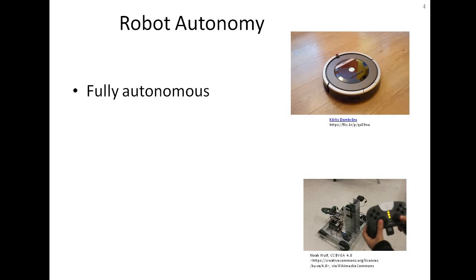There are fully autonomous robots — robots that can complete their tasks without any interaction with humans. For example, a floor cleaning robot: when you press the on button, it autonomously makes a map of the environment, does path planning, and then follows the path and cleans the room without any human intervention.